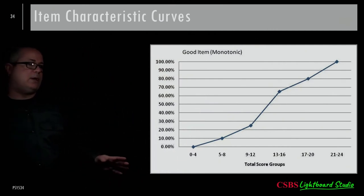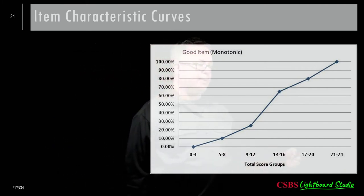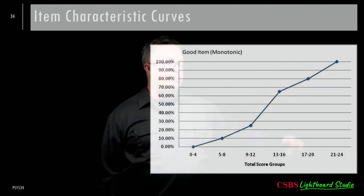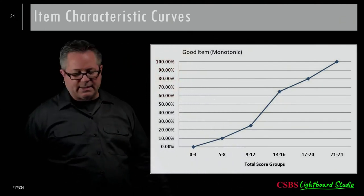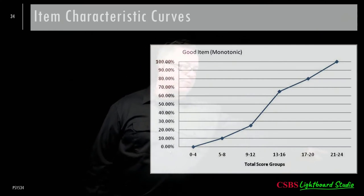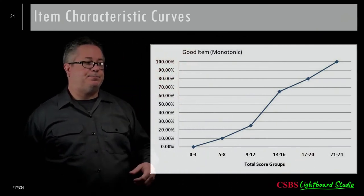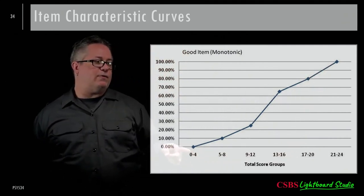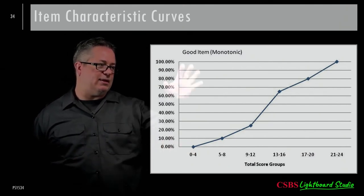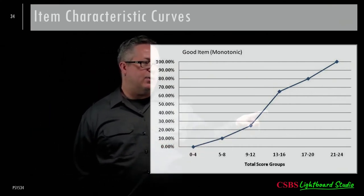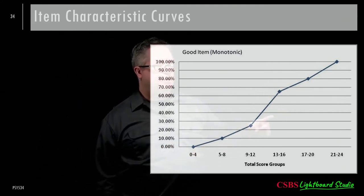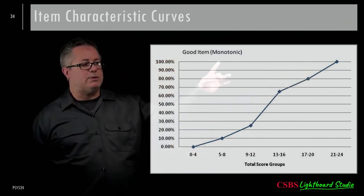Monotonic means that as the total score groups increase, the proportion endorsing the item also increases. Think of a math test: if you got 21–24 out of 24 items correct and we pick any one item, you're probably going to get it right. If you only got one item correct, the chance of getting any particular item correct is quite low. This is the expected pattern for a well-functioning item.